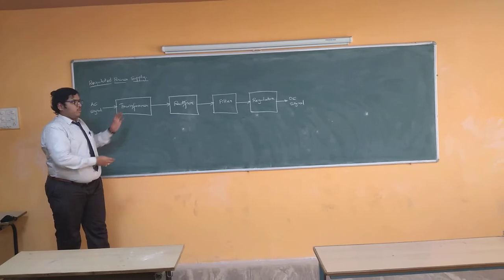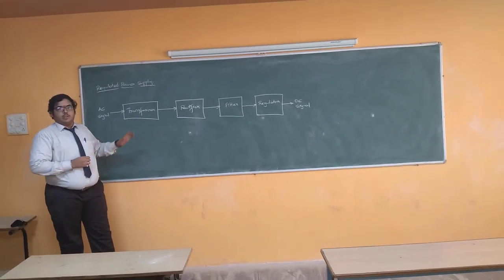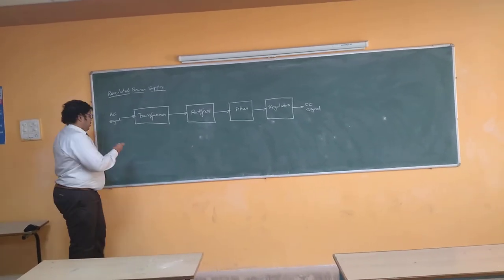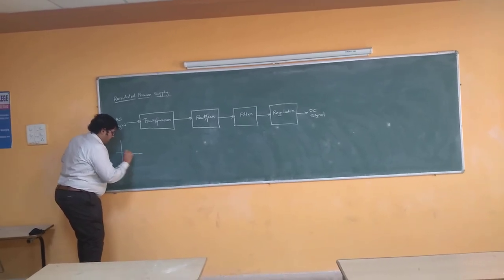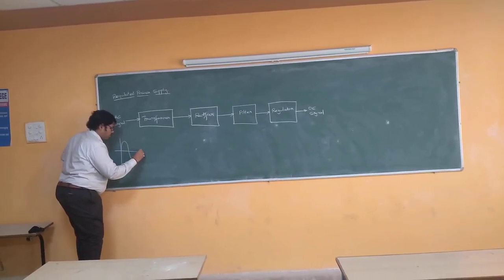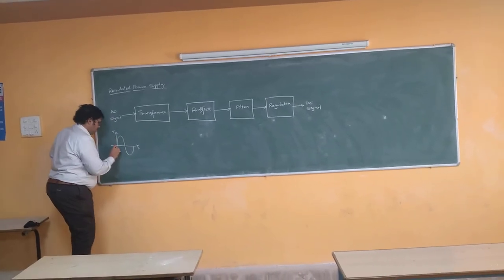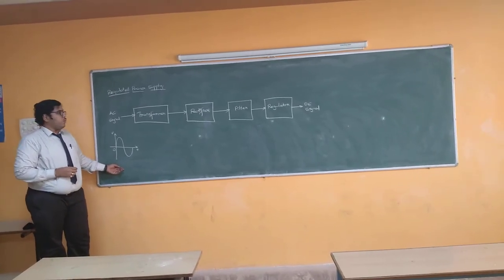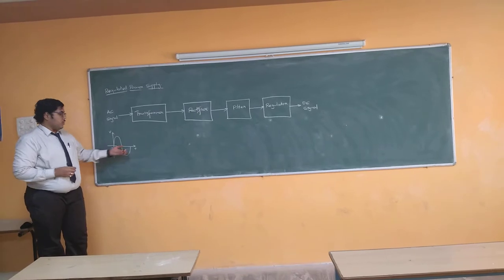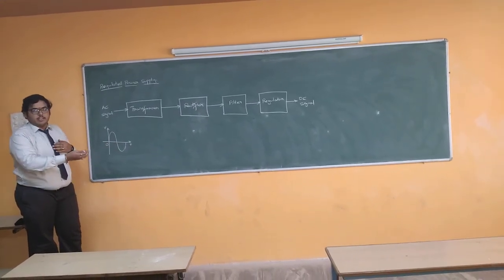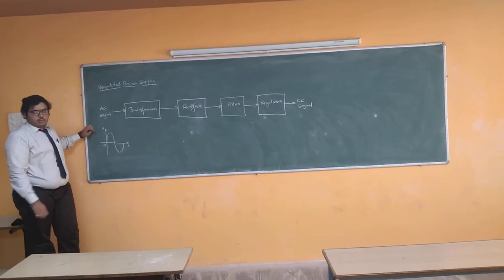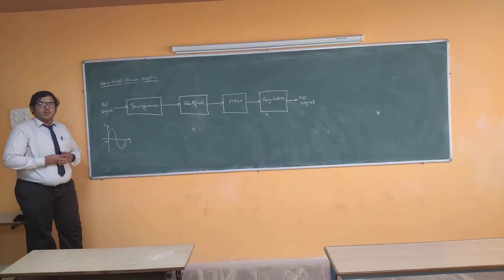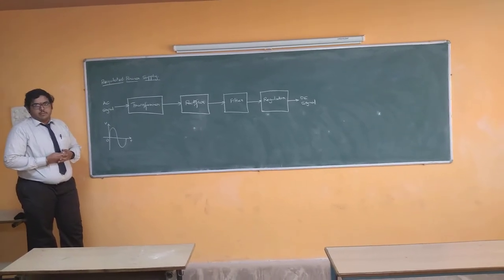Before getting on to the details of these blocks, let me represent a graphical representation of how each and every block converts the AC signal into a DC signal. When we are applying an AC signal — this is our AC signal, which is considered an example of a sinusoidal waveform. We will see how each block converts it. At first, when we are giving it to a transformer — a transformer is a device where it can decrease the voltage as well as increase the voltage of a particular signal.